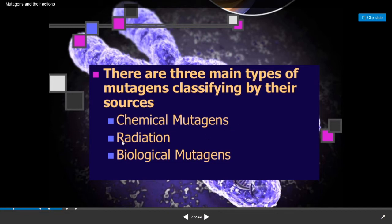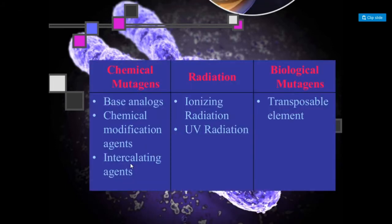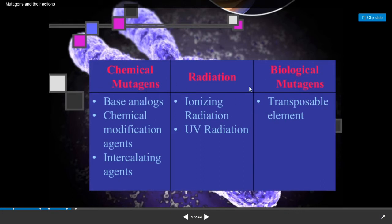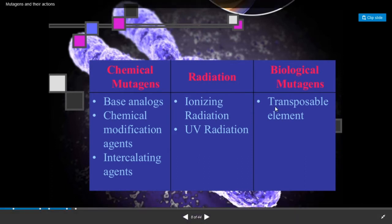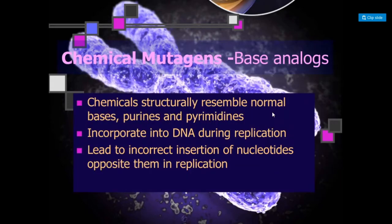Chemical mutagenic agents include base analogues, chemical modification agents, and intercalating agents. Radiations are the physical mutagenic agents, which include ionizing radiations and ultraviolet radiations. The third type are biological mutagenic agents, with the example being transposable elements, also called jumping genes.